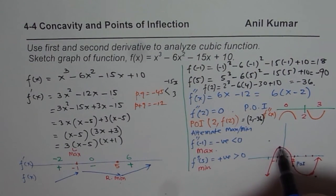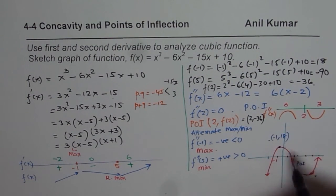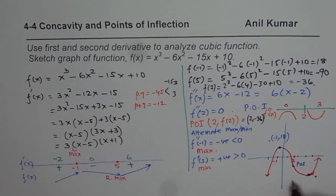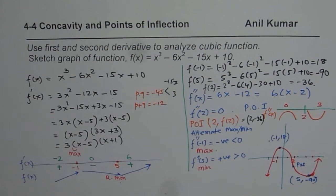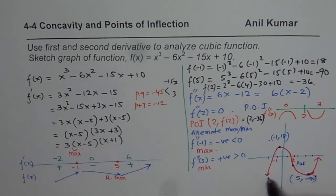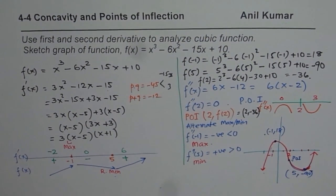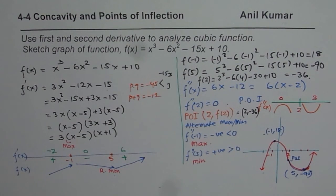So the maximum is at (−1, 18), the minimum is at (5, −90), and the point of inflection is at (2, −36). On the left side of 2 the graph is concave downwards, and on the right side it is concave upwards. That is how you can sketch the function. I hope that helps. Thank you.